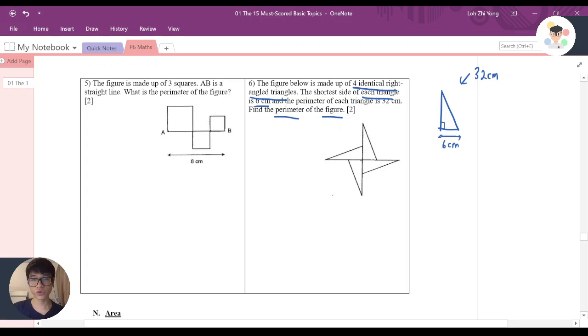The first thing you need to identify is that this is the shortest side. You'll notice that here is also 6cm, and if you compare this and this, here is 6cm like what I wrote there, and here is also 6cm. So it means that here is also 6cm.